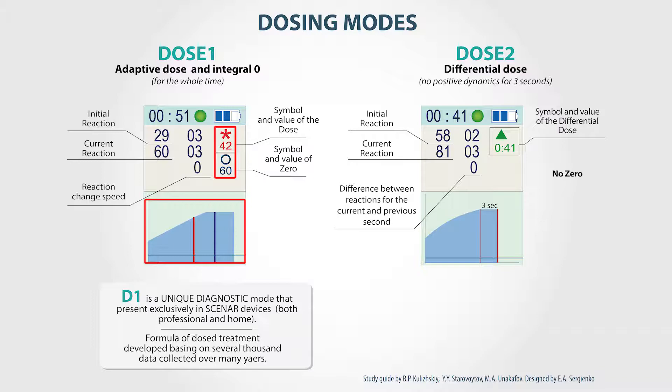Here is an example of working in D1 mode. The algorithm is built on the binary comparison, which means that there is always a comparison of two parameters. First of all, we need to obtain the values of initial reaction of two points or places of electrode application. If there is no difference between them, just measure another point so that we have something to compare.